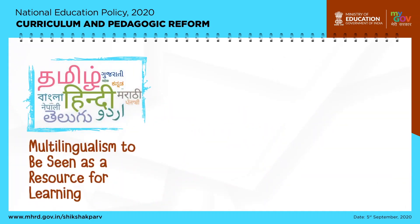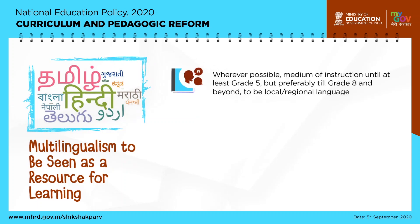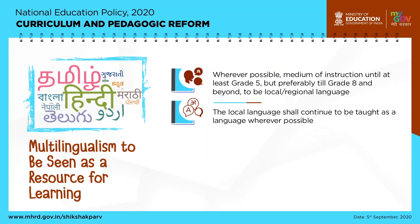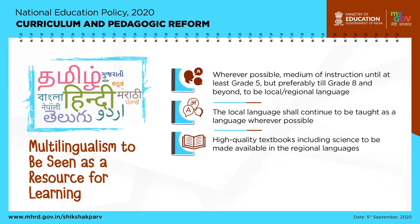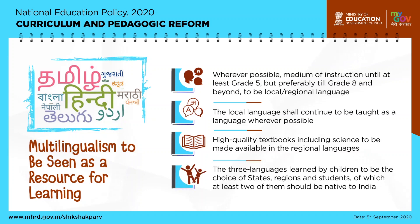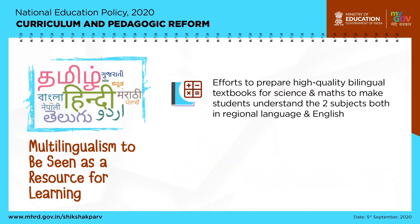Multilingualism is to be seen as a resource for learning. Wherever possible, the medium of instruction until at least grade 5 — but preferably till grade 8 and beyond — is to be in the mother tongue or local/regional language. The local language shall continue to be taught as a language wherever possible. High-quality textbooks, including for science, are to be made available in regional languages. The three languages learned by children shall be the choice of states, regions, and students, of which at least two should be native to India. Efforts will be made to prepare high-quality bilingual textbooks for science and maths in both regional languages and English.